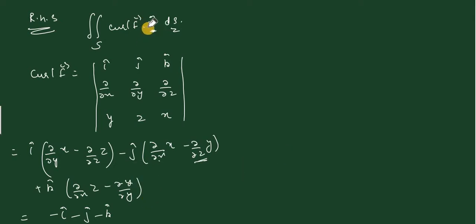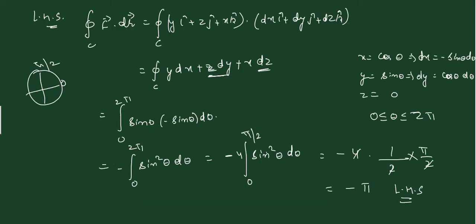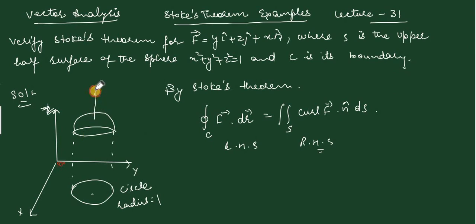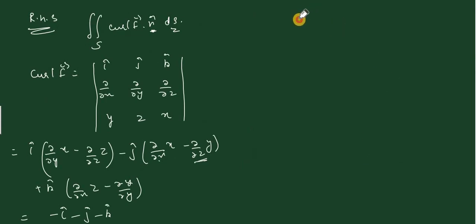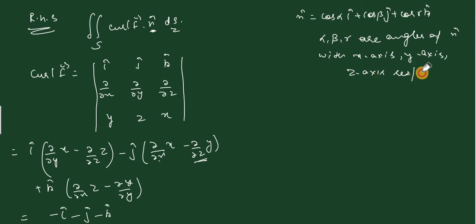This is curl f vector: minus i cap minus j cap minus k cap. Now, what is n cap? We choose the outward normal. For the upper hemisphere, the outward normal points upward in the z direction.